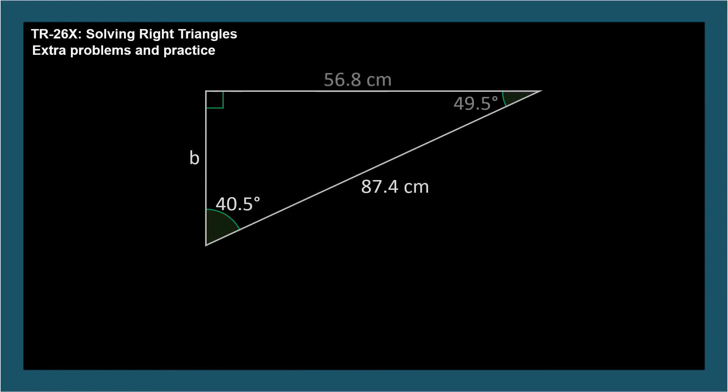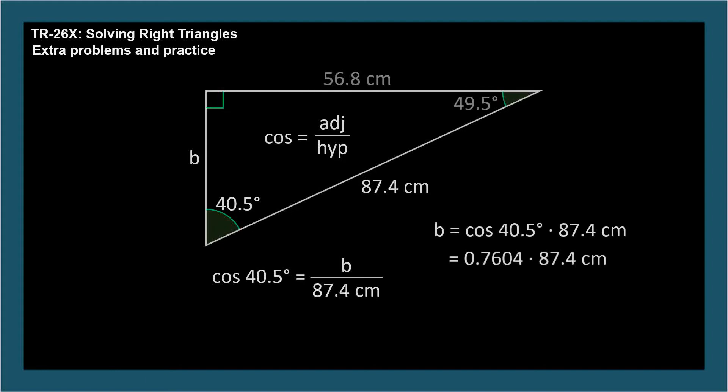Cosine 40.5 is adjacent over hypotenuse and the side adjacent to the angle is b. Cosine 40.5 degrees equals b divided by 87.4 centimeters. Cosine 40.5 degrees equals 0.7604. So b equals 87.4 centimeters times 0.7604, which is 66.5 centimeters.